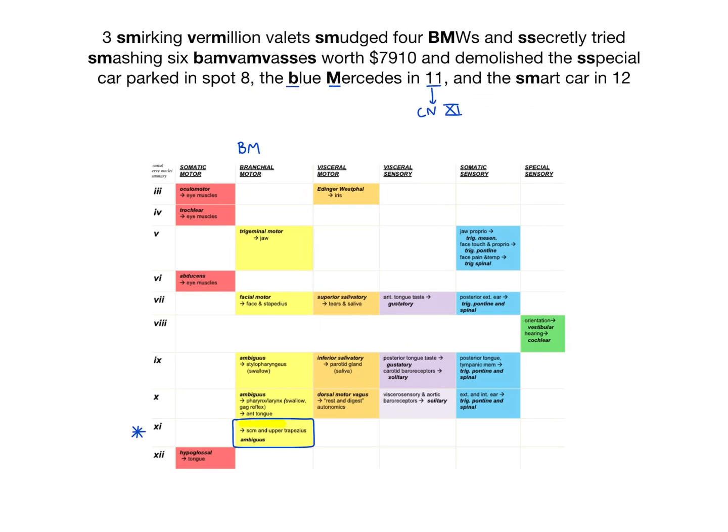The blue Mercedes in spot 11 represents cranial nucleus 11 — BM for blue Mercedes stands for branchial motor of the ambiguous nucleus, which corresponds to the accessory nerve.